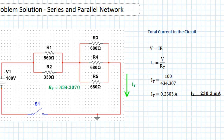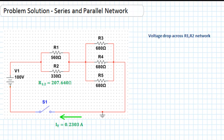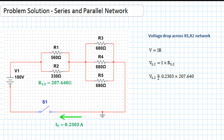Normally you would convert that into milliamps, giving 230.3 milliamps, but for the rest of the calculations we can use 0.2303 — so let's keep both values. Now we know the total current and the effective resistance of the R1/R2 network, so we can work out the voltage drop across it using Ohm's law: V12 = 0.2303 × 207.640 ohms = 47.819 volts.